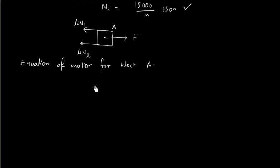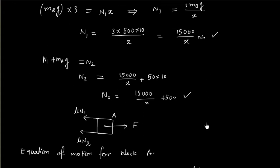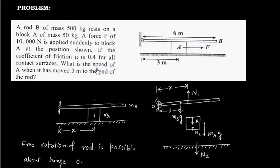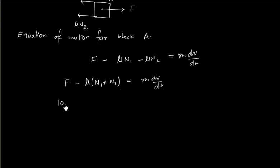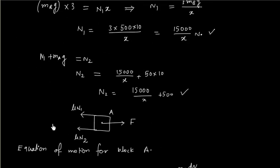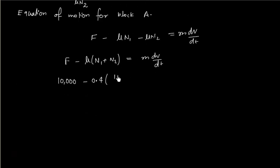And this will be F minus mu N1 minus mu N2 is equal to mass into acceleration. That is F minus mu times (N1 plus N2). Force is given. Supplied force is 10,000 newtons. Friction coefficient is 0.4, and normal reaction 1 is 15,000 by x. Normal reaction 2 is 15,000 by x plus 500.